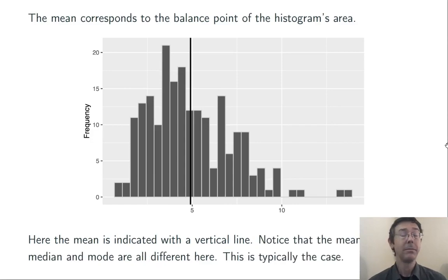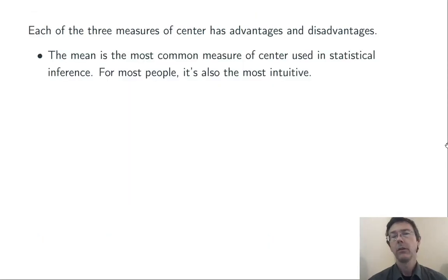In this case, as in most cases, the mean, median, and mode are all different from one another. So why do we really need three measures of center? Why don't we just always use the mean? Well, each one of these measures of center has its own advantages and disadvantages.